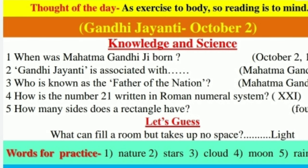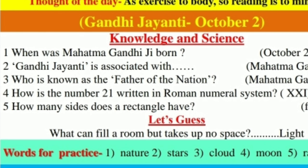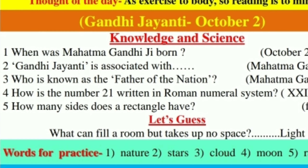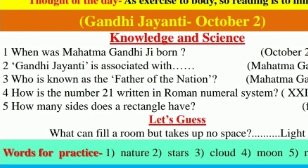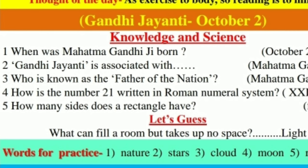How is the number 21 written in the Roman numeral system? Dear students, we write XXI, that is 21. Today's last question: how many sides does a rectangle have? Dear students, a rectangle has 4 sides.